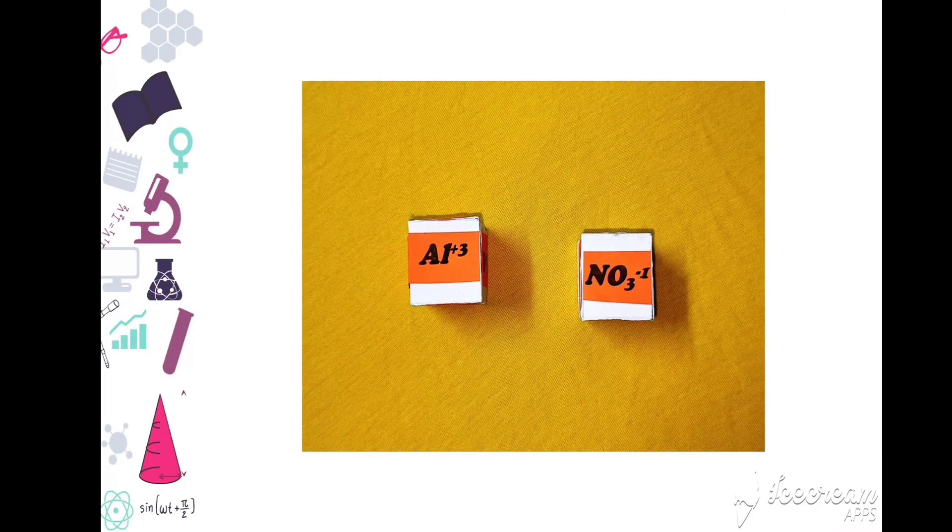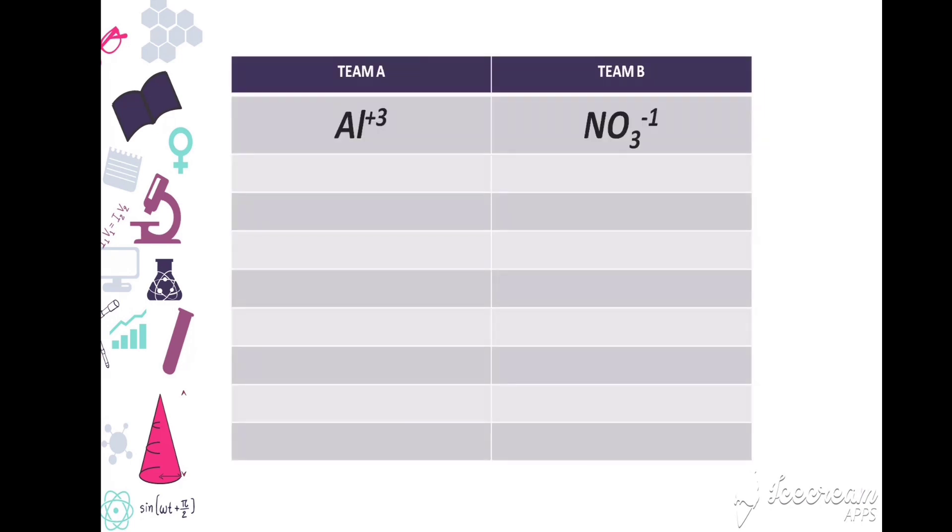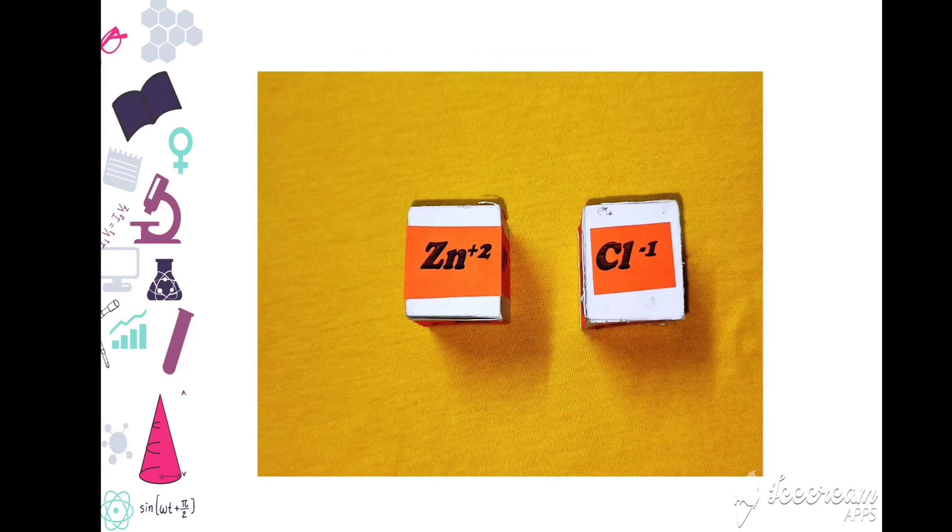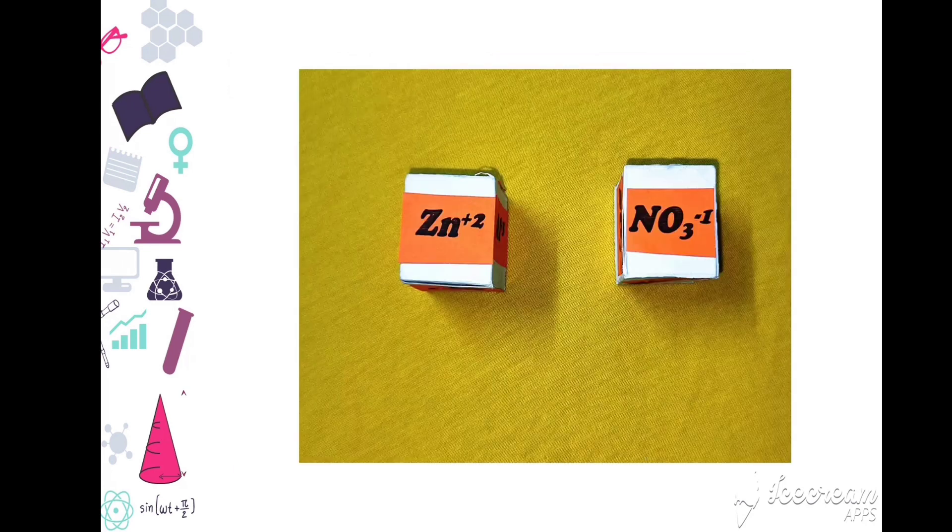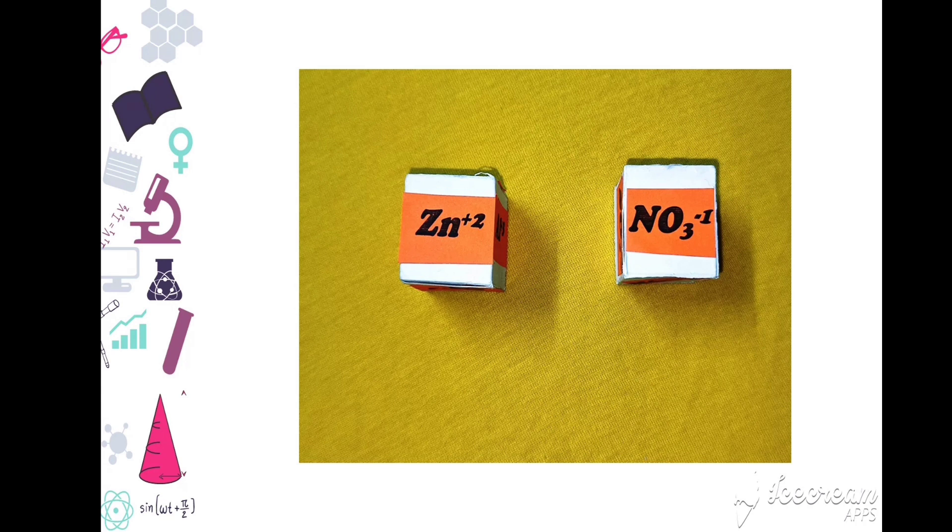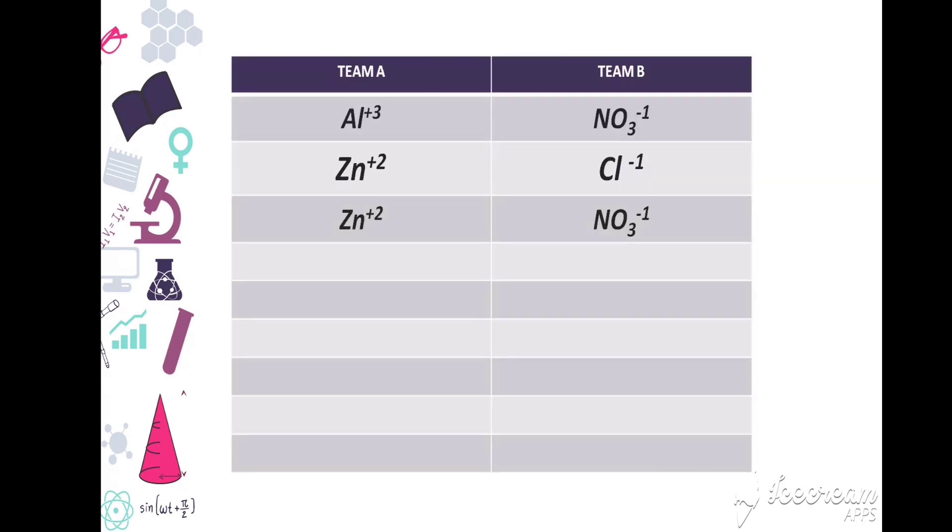First chance: Al plus 3, NO3 minus 1. Noted in the table. Next, Zn plus 2, Cl minus 1. Noted in the table. Next chance: Zn plus 2, NO3 minus 1. Noted in the table.